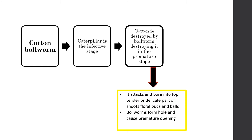Cotton is usually infected by a worm termed cotton bollworm, and the infective stage of this worm is the caterpillar stage. It infects the premature stage of cotton and destroys it entirely.